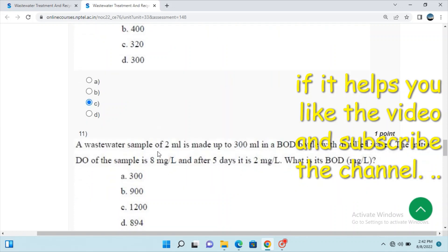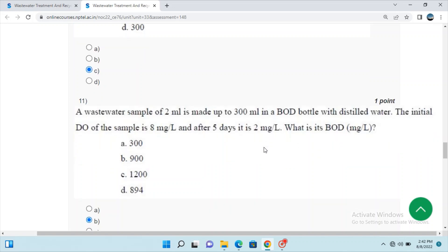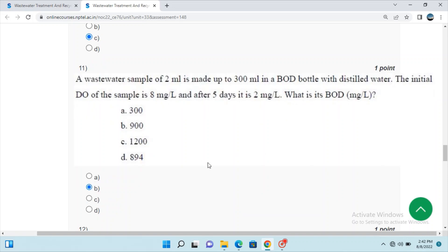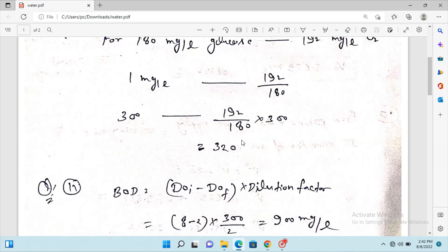Question 11: A wastewater sample of 2 ml is made up to 300 ml in a BOD bottle with distilled water. The initial dissolved oxygen of the sample is 8 mg per liter, and after five days it is 2 mg per liter. What is the BOD? The answer is B.